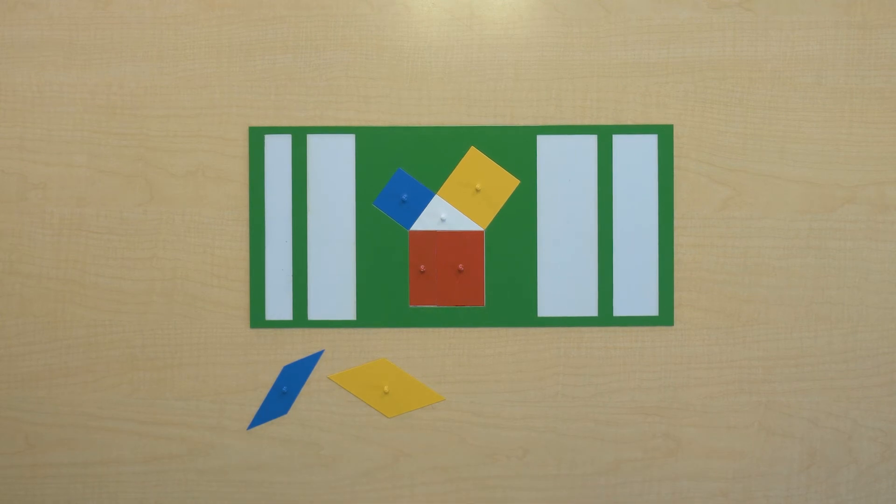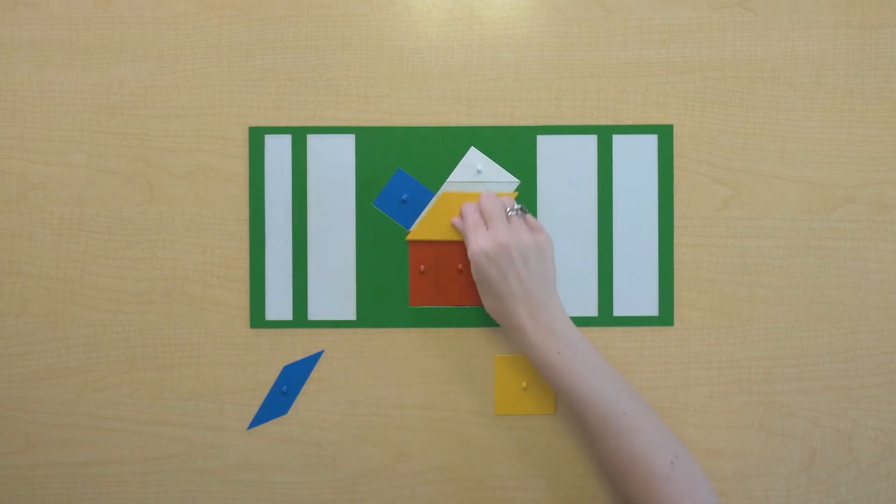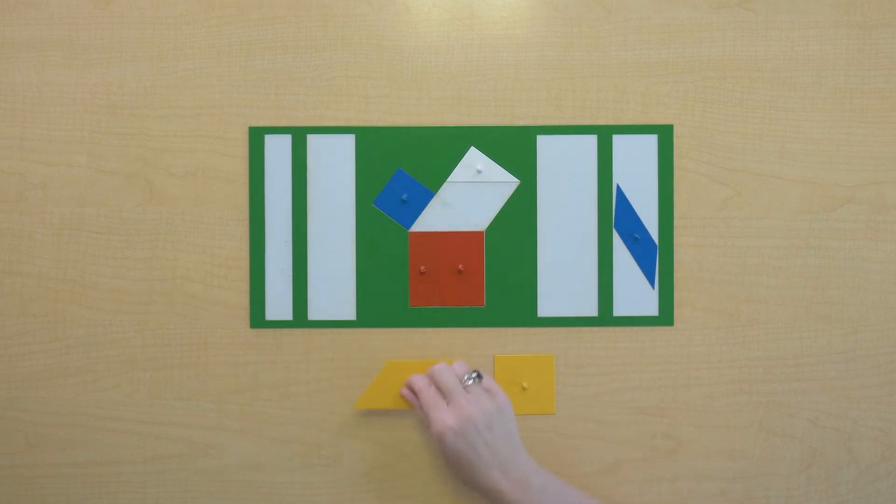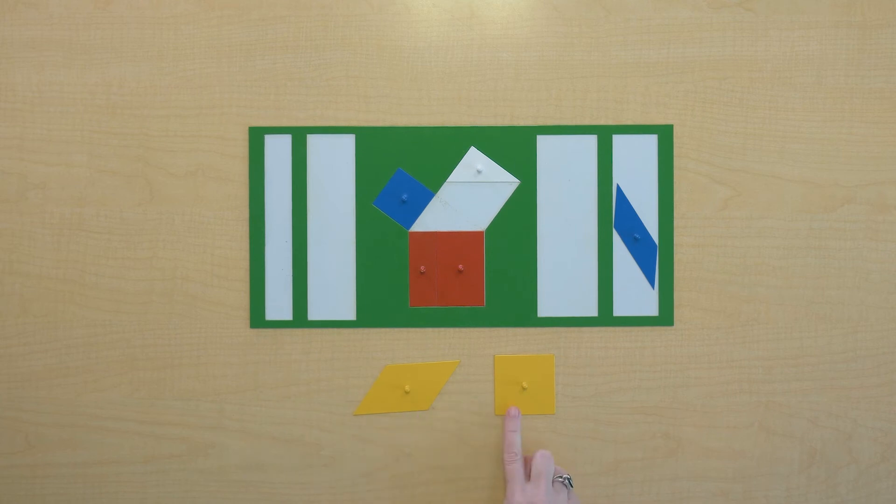So take that out. Now I'm going to use the whole space again. So I can see that this yellow parallelogram took up the same amount of space as our yellow square. We can see that this yellow parallelogram and the yellow square are equivalent.